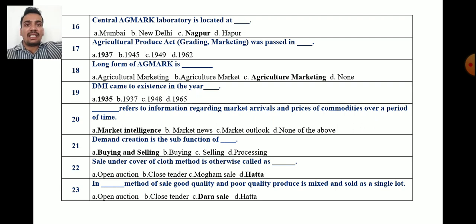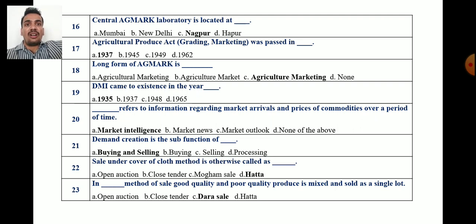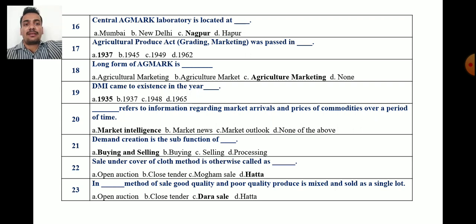Question 22: Sale under cover of cloth method — this comes under the different methods of selling and buying. Options are: open auction, closed tender, mogam sale, or hatta system. The correct answer is that sale under cover of cloth is otherwise known as the hatta system of buying and selling.